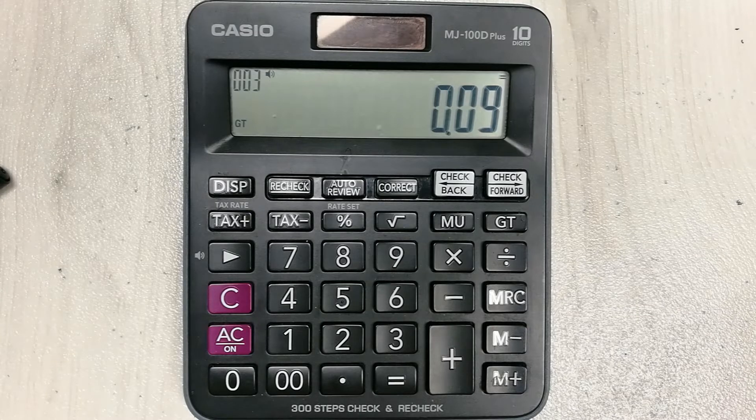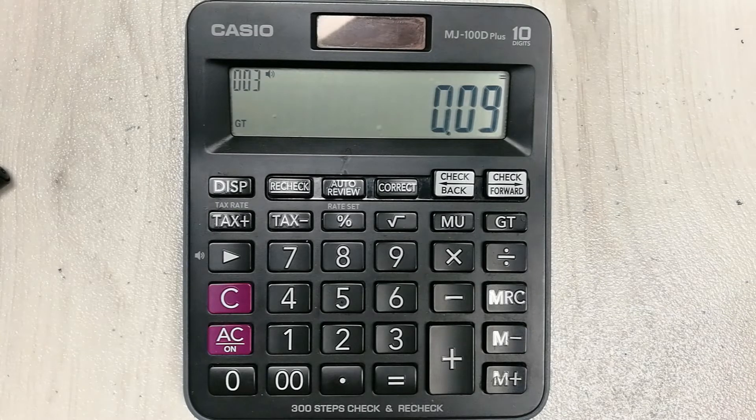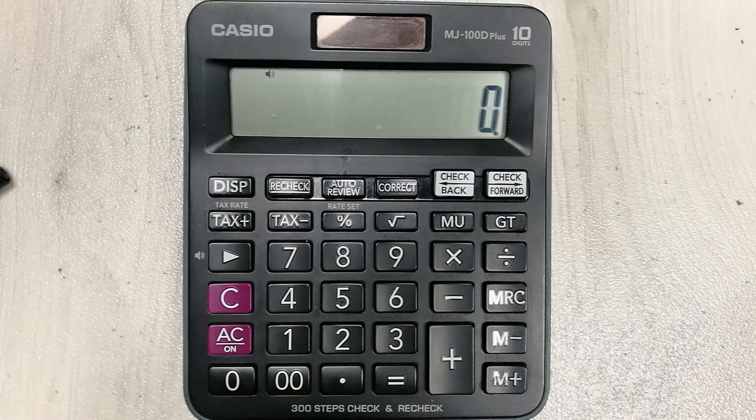So guys, here is your answer. 9 percent equals 0.09. This is how you can convert any percentage into a decimal number.